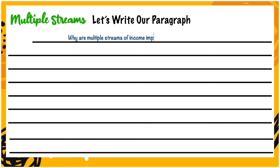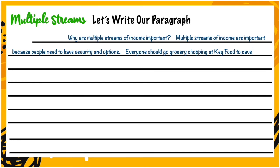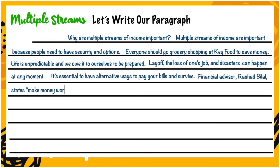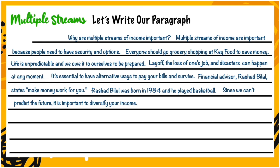Let's practice eliminating irrelevant details when writing our paragraphs. Our paragraph reads: 'Multiple streams of income are important because people need to have security and options. Everyone should go grocery shopping at Key Food to save money. Life is unpredictable and we owe it to ourselves to be prepared. Layoffs and disasters can happen at any moment. It is essential to have alternative ways to pay your bills and survive.' Which sentence can we eliminate? 'Everyone should go grocery shopping at Key Food to save money' — that's not telling us why multiple streams of income is important.